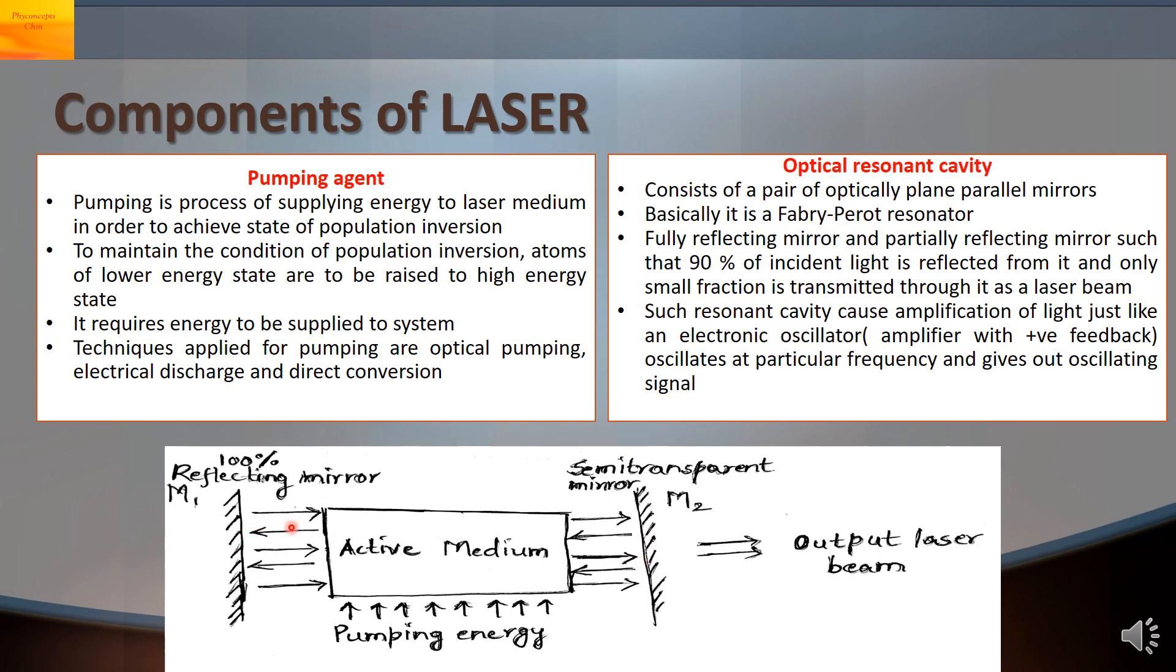Light will be passing through the active medium. It will be reflected by the mirror M2 back to the mirror M1. Again the light will be reflected back from M1 to M2 then from M2 to M1.